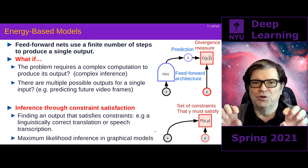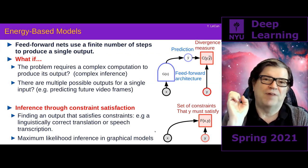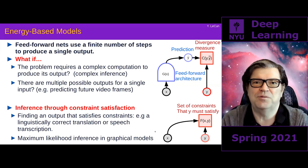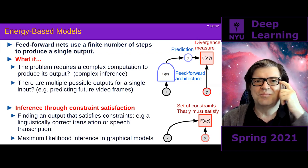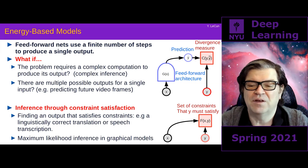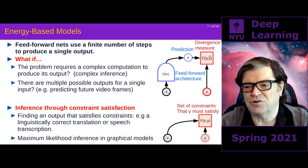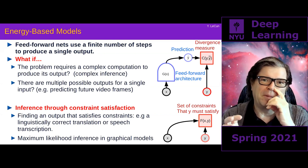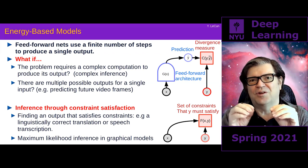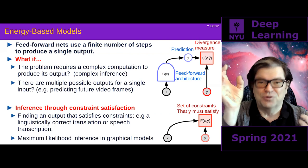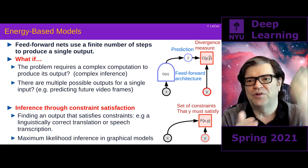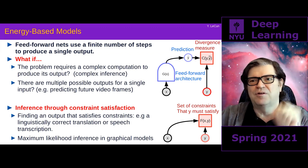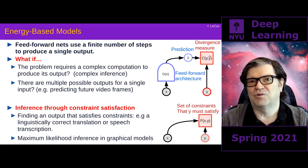This idea of having variable nodes — the circles — and then factors, which are things that measure the compatibility or incompatibility between the values of variable nodes, is a classical way of representing intelligent systems called graphical models. In this particular case, something called factor graphs. Factor graphs are bipartite graphs with two types of nodes: variable nodes and factor nodes. Factor nodes are squares, and what they do is give you a value that measures the compatibility between the variables that enter them.